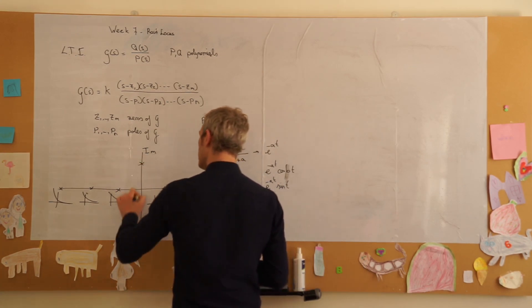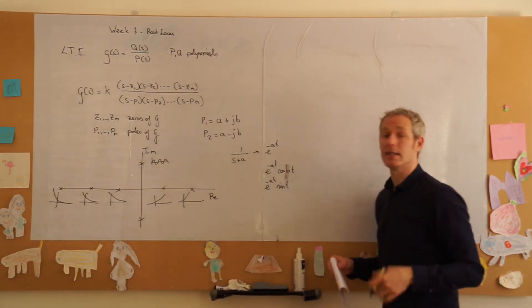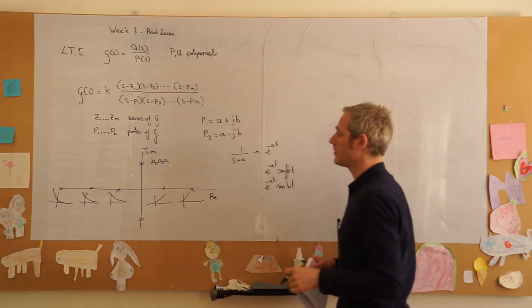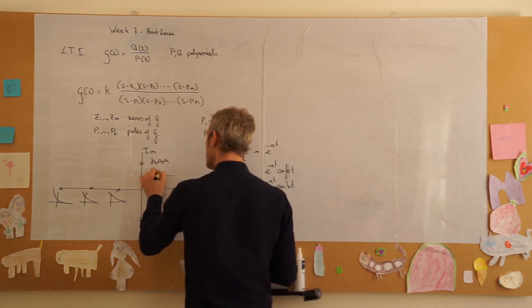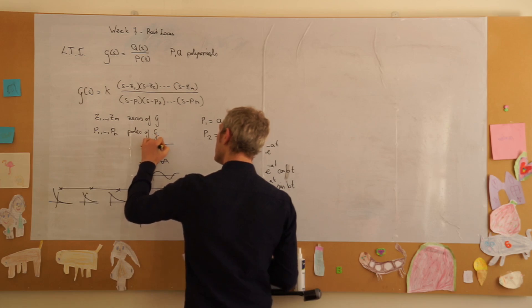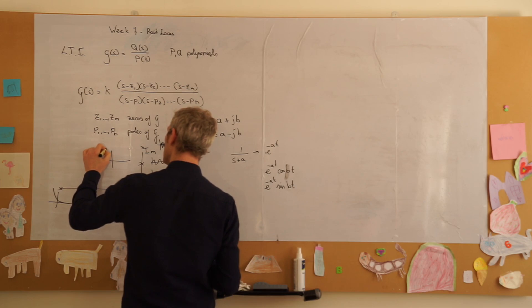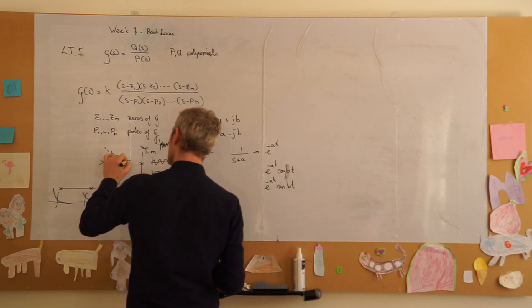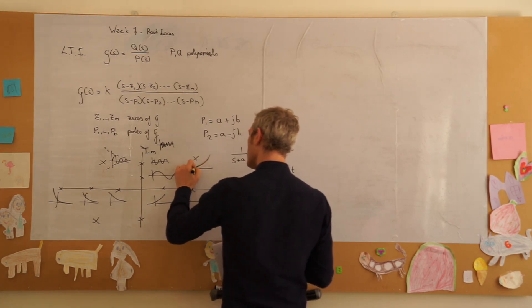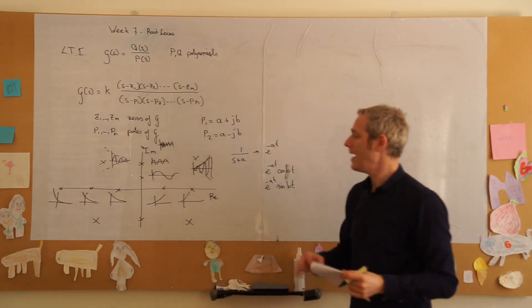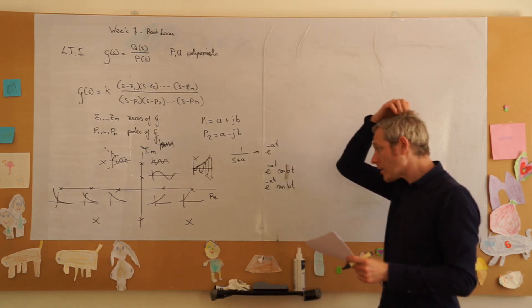Now, if we have poles on the imaginary axis, and they always come in pairs, then we will get pure oscillations. That is in the case where this a is simply equal to zero, then we get pure oscillations. And the further we go up on the imaginary axis, the faster those oscillations will be, right up to here, where we have very fast oscillations. And if we are not on an axis, but we are somewhere in the left half plane, then we will get dampened oscillations. And if we are somewhere here, with another set of pairs, we will get exponentially growing oscillations. And anything on the right-hand side is unstable, and anything on the left-hand side will be stable.